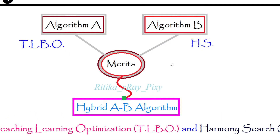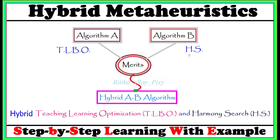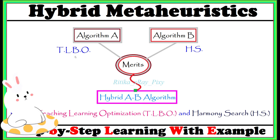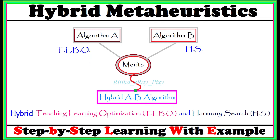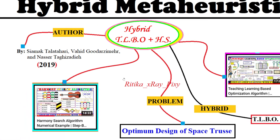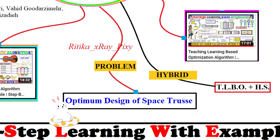Here we have Algorithm A — teaching learning based optimization algorithm — and Algorithm B — harmony search algorithm. The author combined the merits of these two algorithms together and formed a new algorithm: the hybrid teaching learning based optimization algorithm and harmony search algorithm, to solve optimization problems. The hybrid teaching learning based optimization algorithm was introduced in 2019.